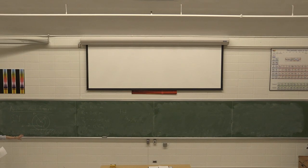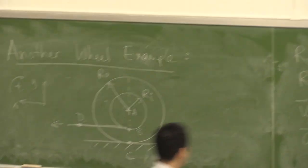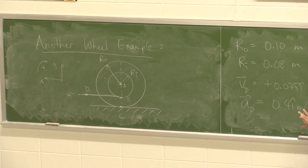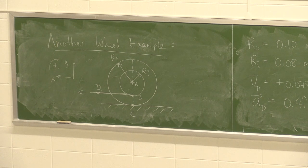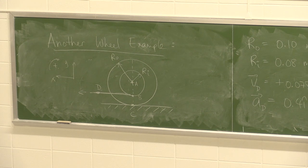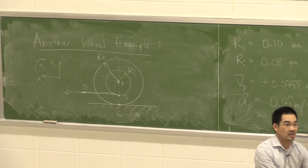One more quick example on the board here, just to wrap up chapter 16. More rolling wheels without slip. I've got a demo for you, so let's assume that we have a wheel. The wheel has an inner hub, an outer wheel radius R-naught of 0.1 meters, and an inner radius R-i of the hub at 0.08 meters. There's going to be a rope that wraps around the hub. The question is, when I pull on this string, which way will the wheel roll, and what are the accelerations at various points?